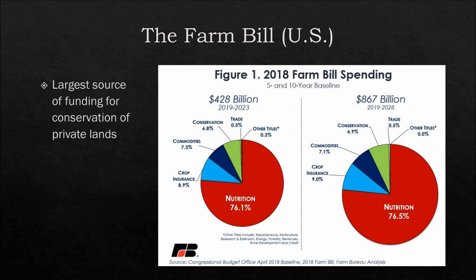One piece of legislation that addresses both agriculture and conservation is the Farm Bill in the U.S., which is passed around every five years and is the largest source of funding for conservation of private lands. Around seven percent of these billions of dollars goes towards conservation when addressing agriculture. With the Farm Bill, you have voluntary conservation programs where farmers, ranchers, and forest owners work with the USDA to improve existing habitat and create new habitat.